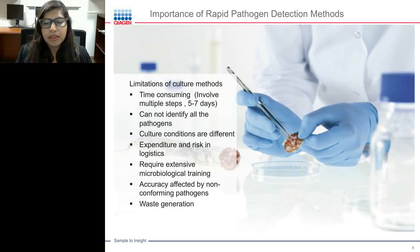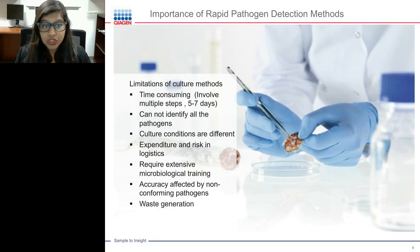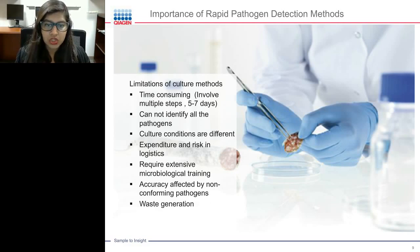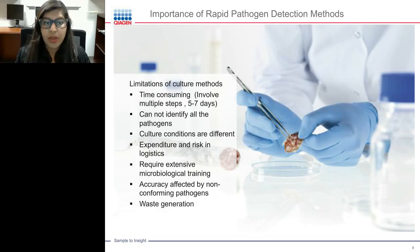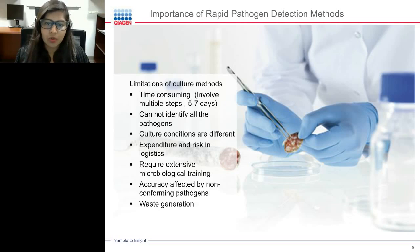Culture has been the gold-standard method — the most cost-effective and used worldwide — but it has limitations. It is time-consuming, involves multiple steps, and takes around five to seven days. It cannot identify all pathogens at the same time, and culture conditions differ for each pathogen. It also involves risk, logistics expenditure, requires extensive microbiological training, and generates a lot of waste. This has created an industry need for rapid detection methods for microbial detection and quantification.